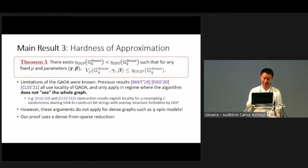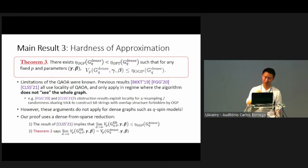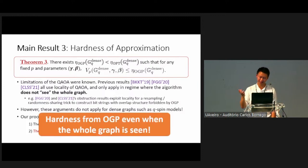But once you have a dense graph, like the all-connected Q-spin model, these arguments don't apply because you see the entire graph, even at the lowest level p equals one. But our proof uses previous results and an idea that we call dense from sparse reduction. It's actually very simple. The proof of this is like two lines. The result from this previous paper implies that for sparse hypergraphs, the QAOA is limited because of this locality. There's some threshold set by the overlap gap property, which is strictly worse than the optimum value that you cannot surpass at these constant levels. Then we have this universality result that I mentioned in theorem two, which tells you that the performance on the sparse graph is related to the performance on the dense graphs. So by this equality, we can then show that the performance on the dense graph is also limited. We have the punchline that we have hardness from this overlap gap property even when the whole graph is seen.